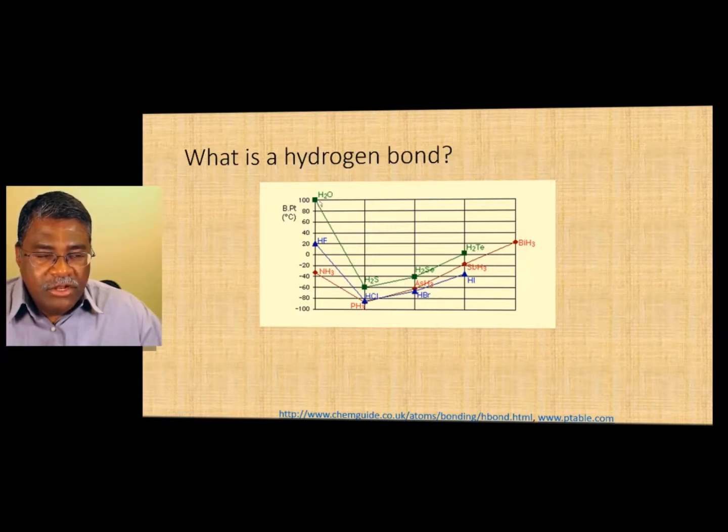We looked at hydrogen fluoride that fluorine is the most electronegative, and will draw the density away to give it a strong delta negative and a delta positive. Oxygen is the electronegative here, and nitrogen and ammonia is electronegative here. But what you realize is that the stronger the electronegativity, the stronger is the hydrogen bond.